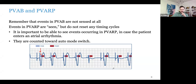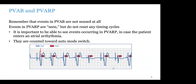Jared: On my implant, we actually had far-field R waves on the atrial channel. With the right programming and by changing the sensitivity, we can program around it. For implanters out there, be careful when implanting your RA lead that you're not putting those bipolar electrodes too close to the tricuspid valve — that's when you can pick up far-field R waves. If you can keep that RA lead a little bit higher where possible, you can usually limit the amount of oversensing on that atrial channel.